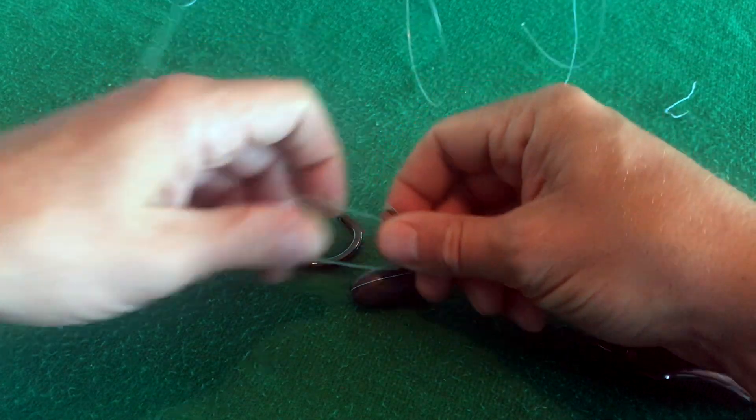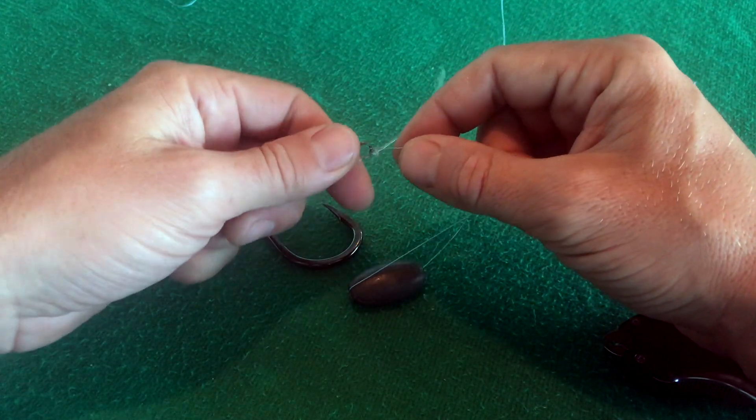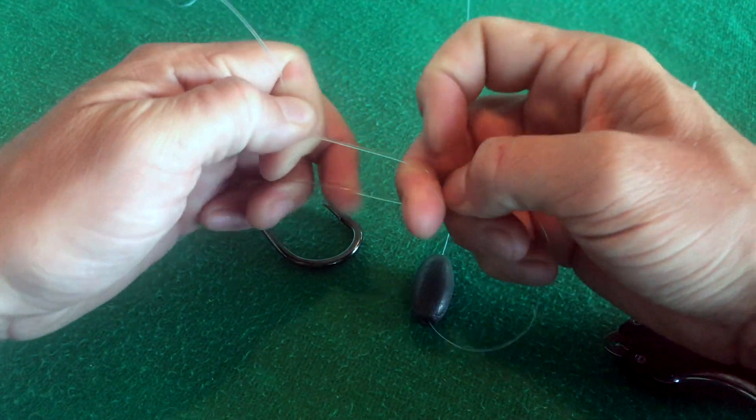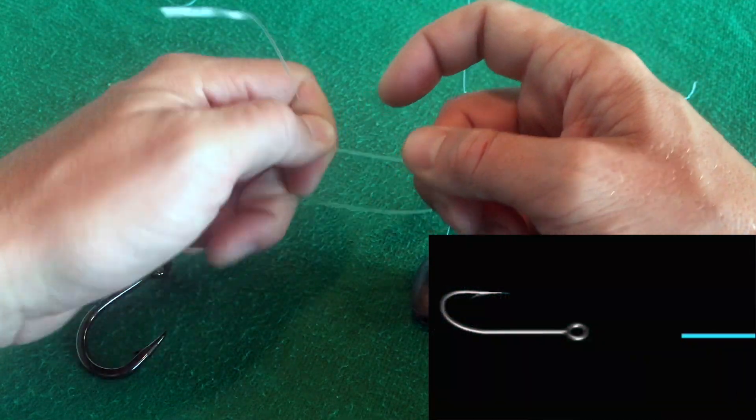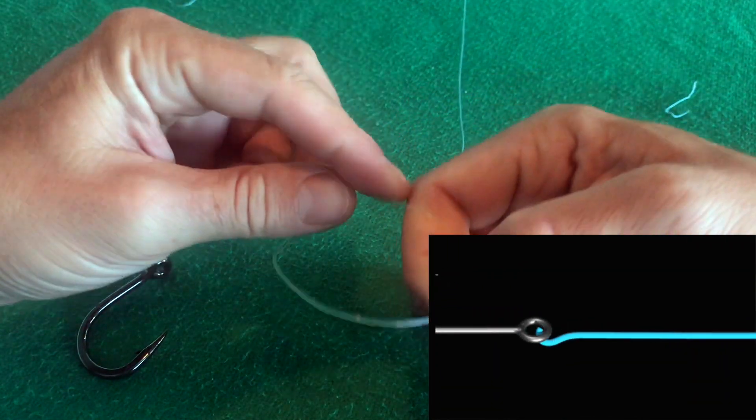And then our leader line, which is this big line I got coming out here, is going to also attach with a cinch knot. So we're going to do that one. And this one you'll probably be able to see a little bit better because it is such a big leader line. And I'm going to tie this one up the same way.